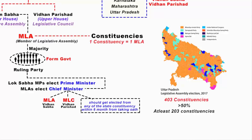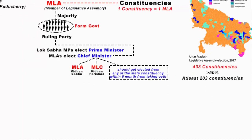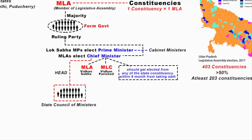The Chief Minister alone cannot run the state government. He or she needs ministers of respective state departments. Once the Chief Minister is elected, he or she has the power to select other people as ministers who will be part of the state council of ministers — just like the Prime Minister selects members to be cabinet ministers in the union council of ministers. Once the Chief Minister forms the state council of ministers, he or she becomes the head of the council, and together they hold the real executive power at state level.